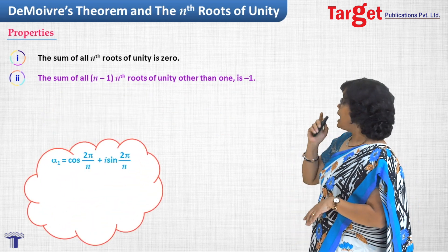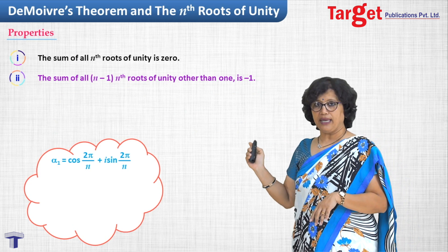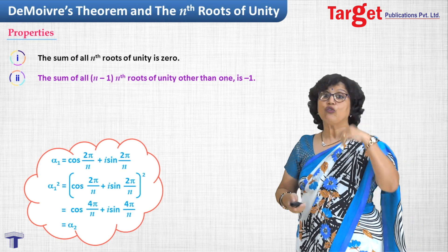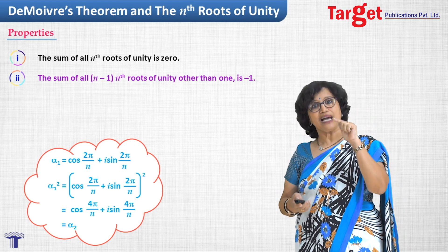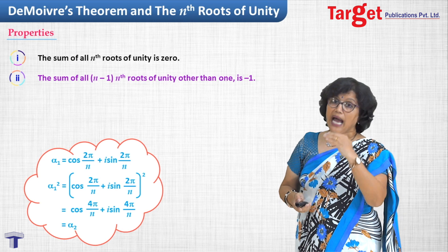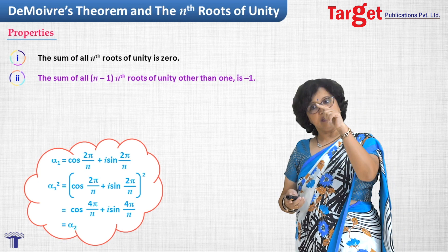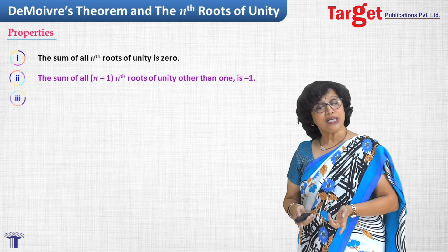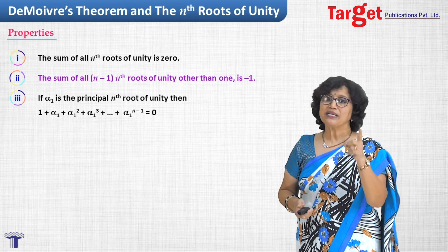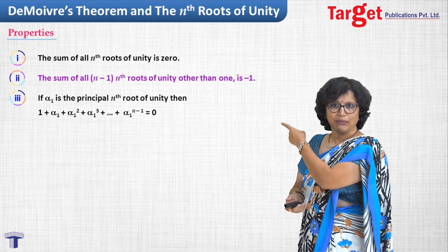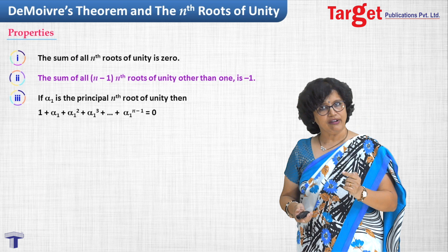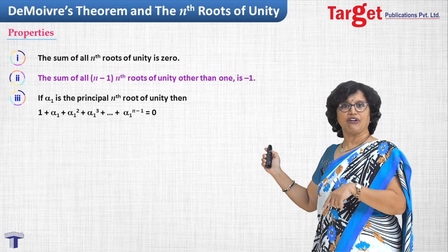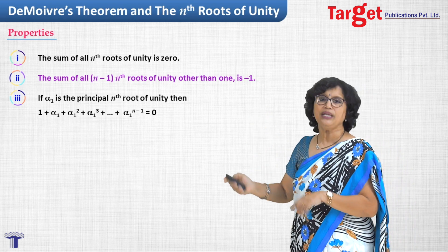The next property: alpha_1 = cos(2*pi/n) + i*sin(2*pi/n). If we square it using De Moivre's theorem, we get cos(4*pi/n) + i*sin(4*pi/n), which is alpha_2. So alpha_2 = alpha_1^2. Similarly alpha_3 = alpha_1^3, alpha_4 = alpha_1^4, and so on. Using this, the sum property becomes 1 + alpha_1 + alpha_1^2 + alpha_1^3 + ... + alpha_1^(n-1) = 0.